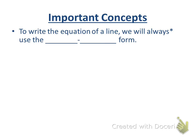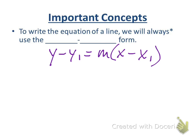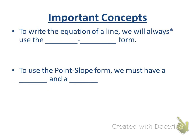Here are some concepts important to this lesson. To write the equation of a line, we will always use the point-slope form — unless the slope and Y-intercept are given directly. Point-slope form is Y minus Y1 equals M times X minus X1. What two pieces of information do we need? We need a slope and a point. If we have two points, we can use them to find the slope and then use one of the points.